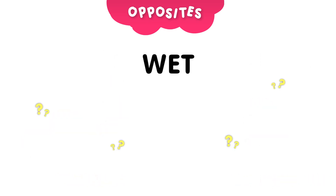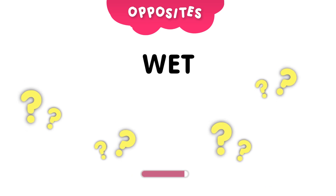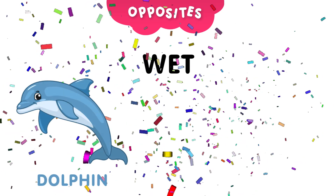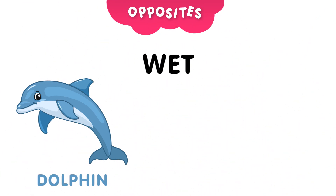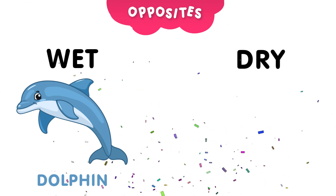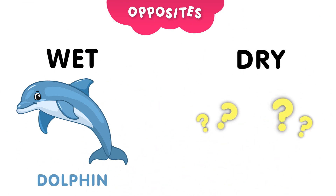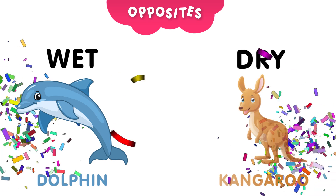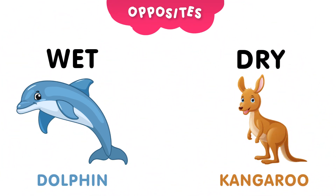Next, we have the word wet. Can you guess which animal loves the wet? The wet animal is the dolphin. What's the opposite of wet? Can you guess? Take 5 seconds to think about it. The opposite of wet is dry. Can you guess which animal lives in dry areas? And the answer is, the kangaroo. Kangaroos live in dry areas.